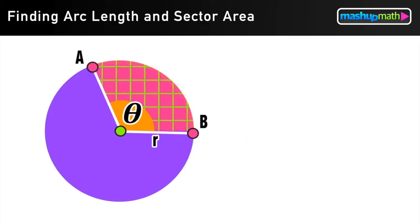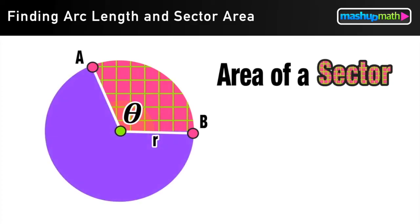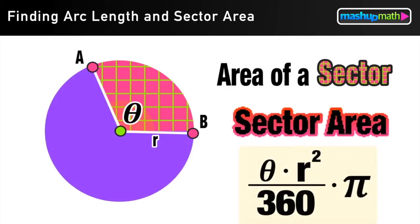Now what if I wanted to find the area of just a portion of the circle, just one sector? Again, if I know the measure of the central angle within that sector, and the length of the radius, I can use the sector area formula to find this area.